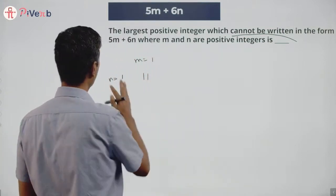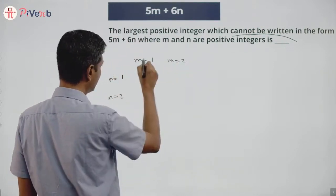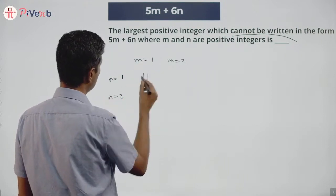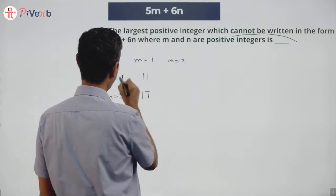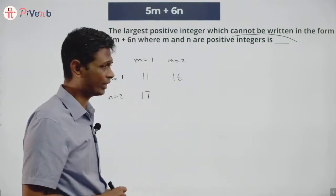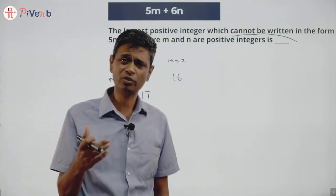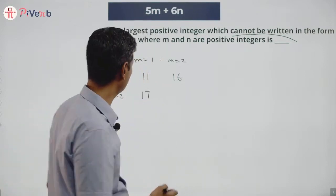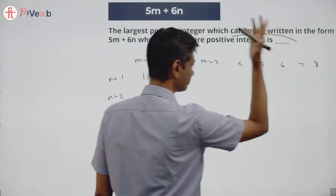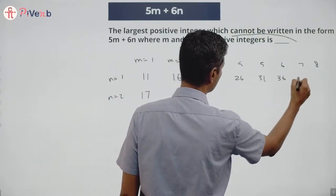What is the next number that can be written? I can keep n=1 and increase m, or keep m=1 and increase n. With m=1, n=2: 11+6=17. With m=2, n=1: 10+6=16. Continuing with n=1 and m=2,3,4,5,6,7,8: I get 11, 16, 21, 26, 31, 36, 41, 46.